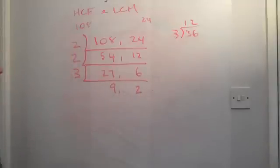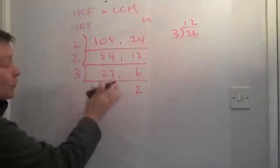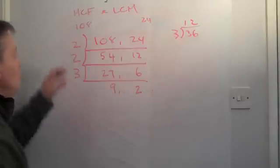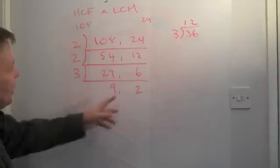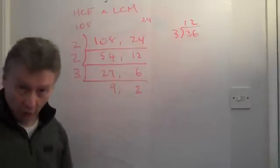Now, I'm now in a position where I have no numbers left that will go into both of them. Not at all. But, I do have numbers at the side and numbers at the bottom. So, I can only divide 9 and 2 by 1.